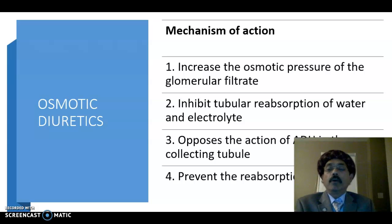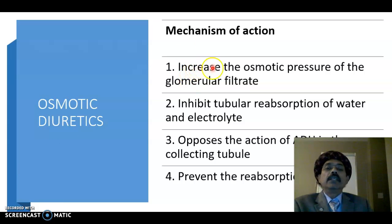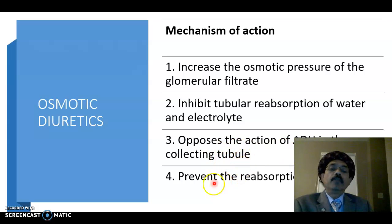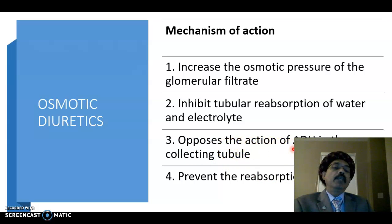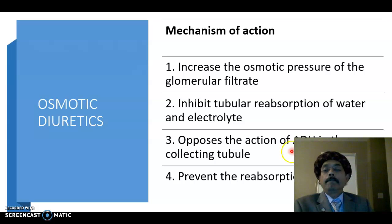What is the mechanism of action of the osmotic diuretics? They increase the osmotic pressure of the glomerular filtrate, inhibit tubular reabsorption of water and electrolytes, and oppose the action of ADH in the collecting tube, preventing the reabsorption of sodium. ADH is the anti-diuretic hormone, also called vasopressin. It is produced in the supraoptic nucleus of the hypothalamus and stored in the posterior pituitary, also called the neurohypophysis. Thus, osmotic diuretics oppose the action of ADH in the collecting tube.